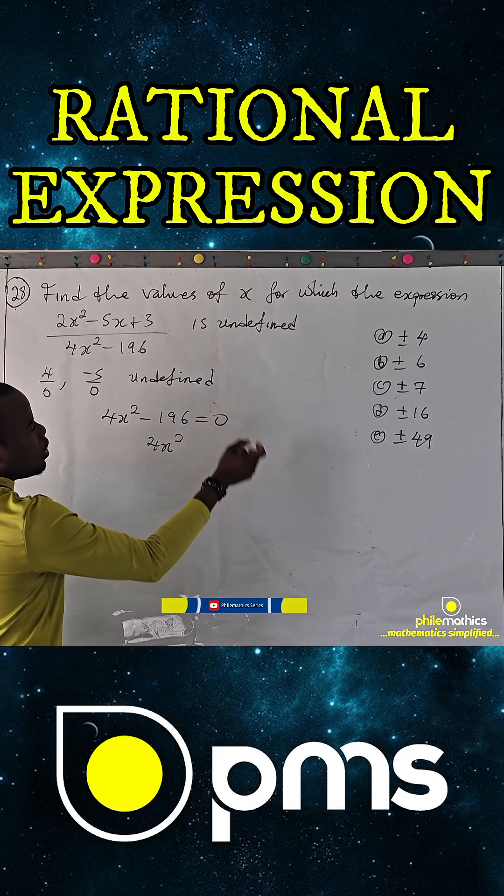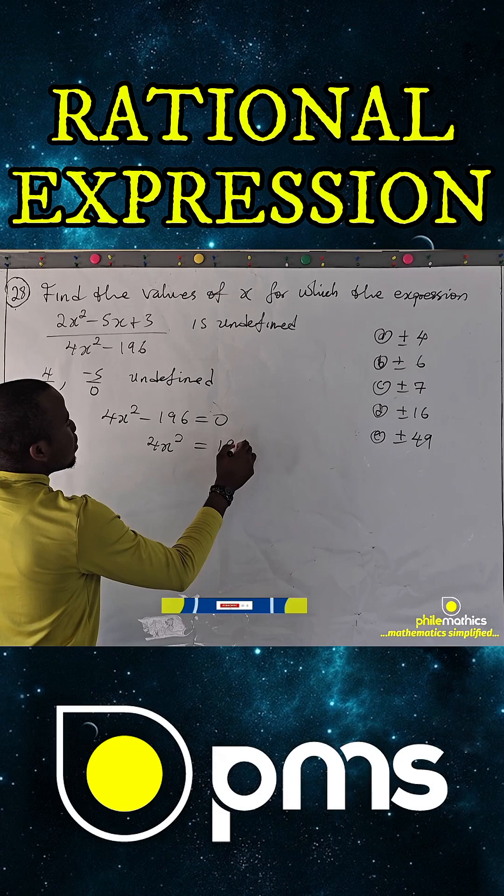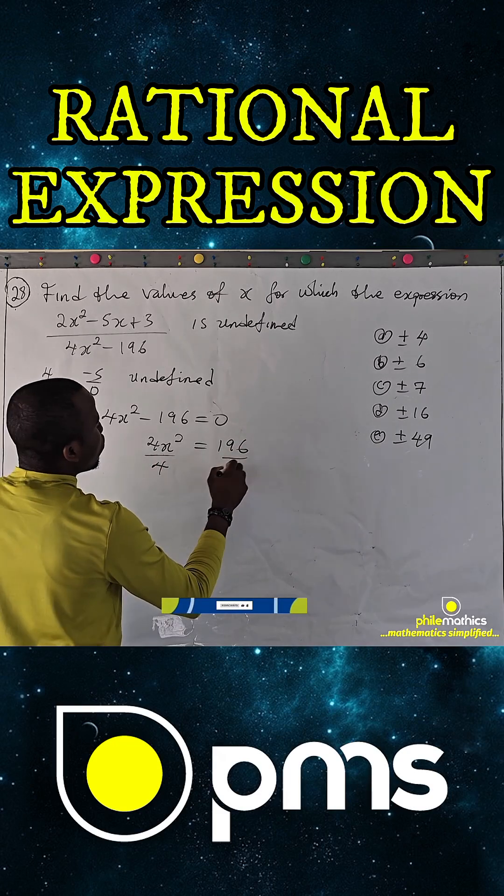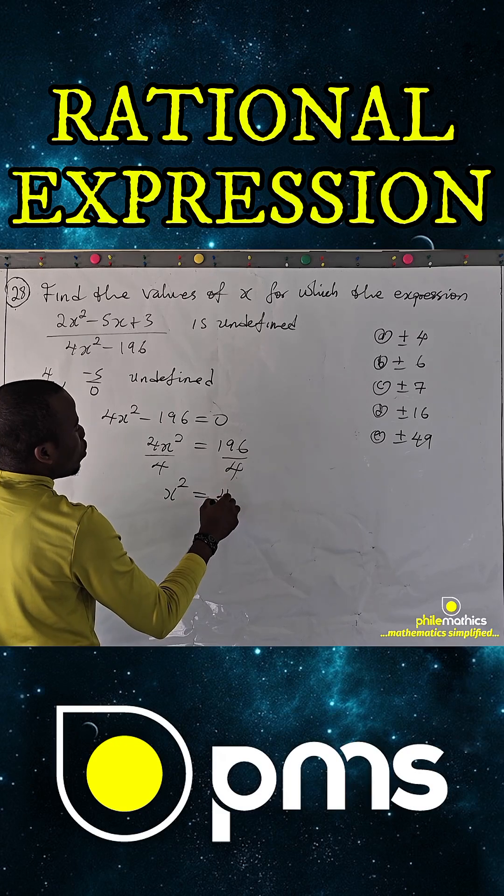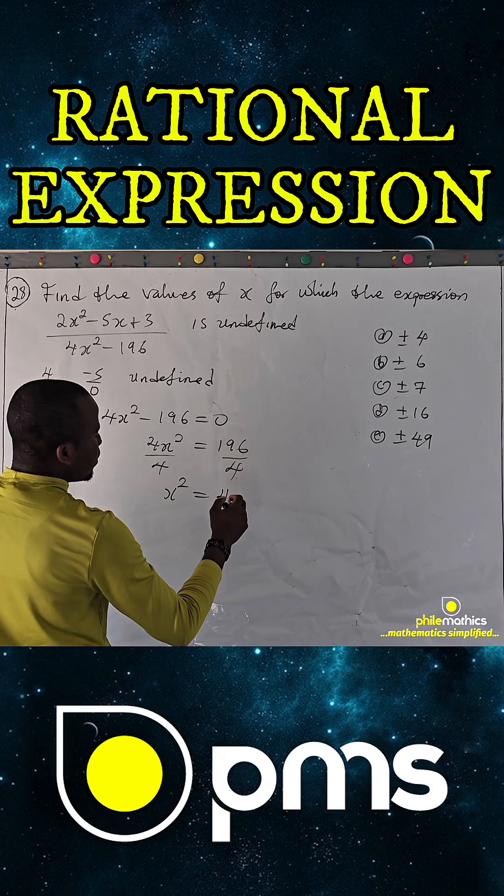4x squared, take this to the right, 196. And divide both sides by 4. x squared will be... 4 into 196 is 49.